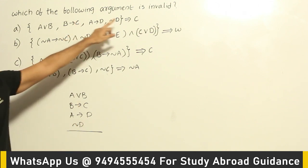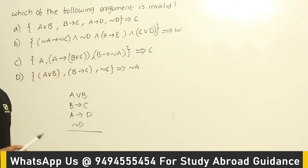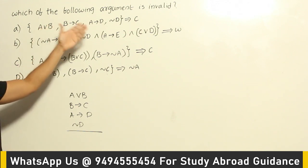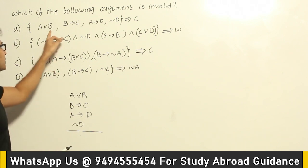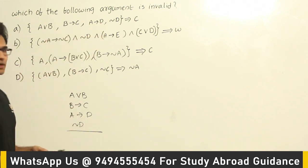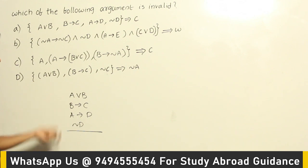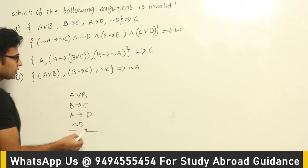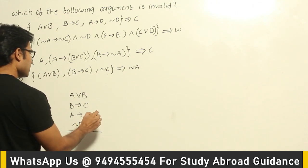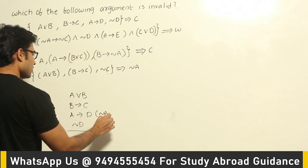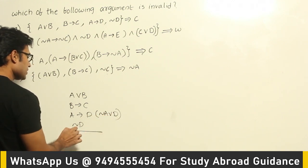Whatever truth values you get, you should also get the same truth values in the conclusion — in that case you can say the argument is valid. Constructing the truth table is a time-taking process; as the number of variables increases it becomes very difficult. If you remember the rules of inference, that's nice. Even without them, you can use your intuition. So this premise is nothing but negation A or D.